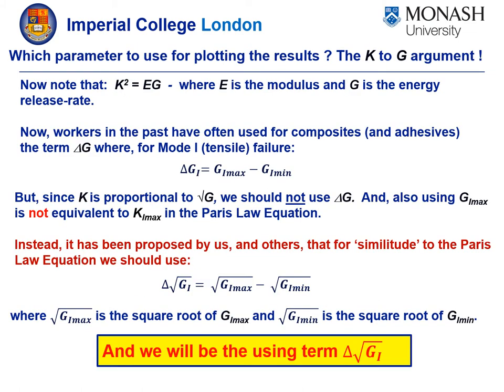To answer this question, the first thing one should notice is that K squared equals EG, where E is the modulus and G is the energy release rate. Workers in the past have often used for composites and adhesives the term delta G, where for mode one delta G is given by this equation, thinking it is analogous to the Paris law. But since K is proportional to root G, we should not use delta G. Instead it has been proposed by us and others that for similitude to the Paris law equation, we should actually use delta root G given by this equation. We will be using the term delta root G in the current work, since we think that gives us similitude to the Paris law equation.